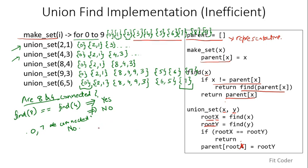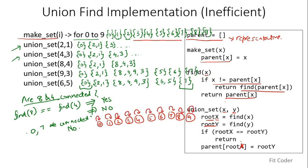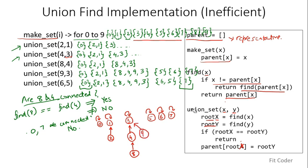Tracing through the example: after make_set, each node is its own parent. After union_set(2,1), node 1 becomes the parent of node 2. After union_set(4,3), node 3 becomes the parent of 4. After union_set(8,4), node 8 becomes a child of 4. After union_set(9,3), node 9 attaches to 3. After union_set(6,5), node 6 becomes the parent of 5. We now have distinct sets: {0}, {2,1}, {8,4,9,3}, {6,5}, and {7}.